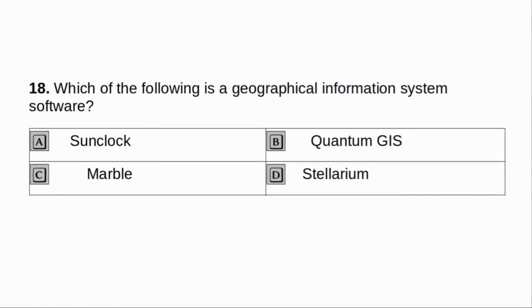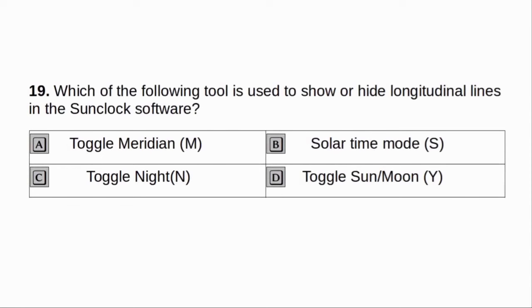Which of the following is geographical information system software? A. Sun Clock. B. Quantum GIS. C. Marble. D. Stellarium. Answer: B. Quantum GIS.